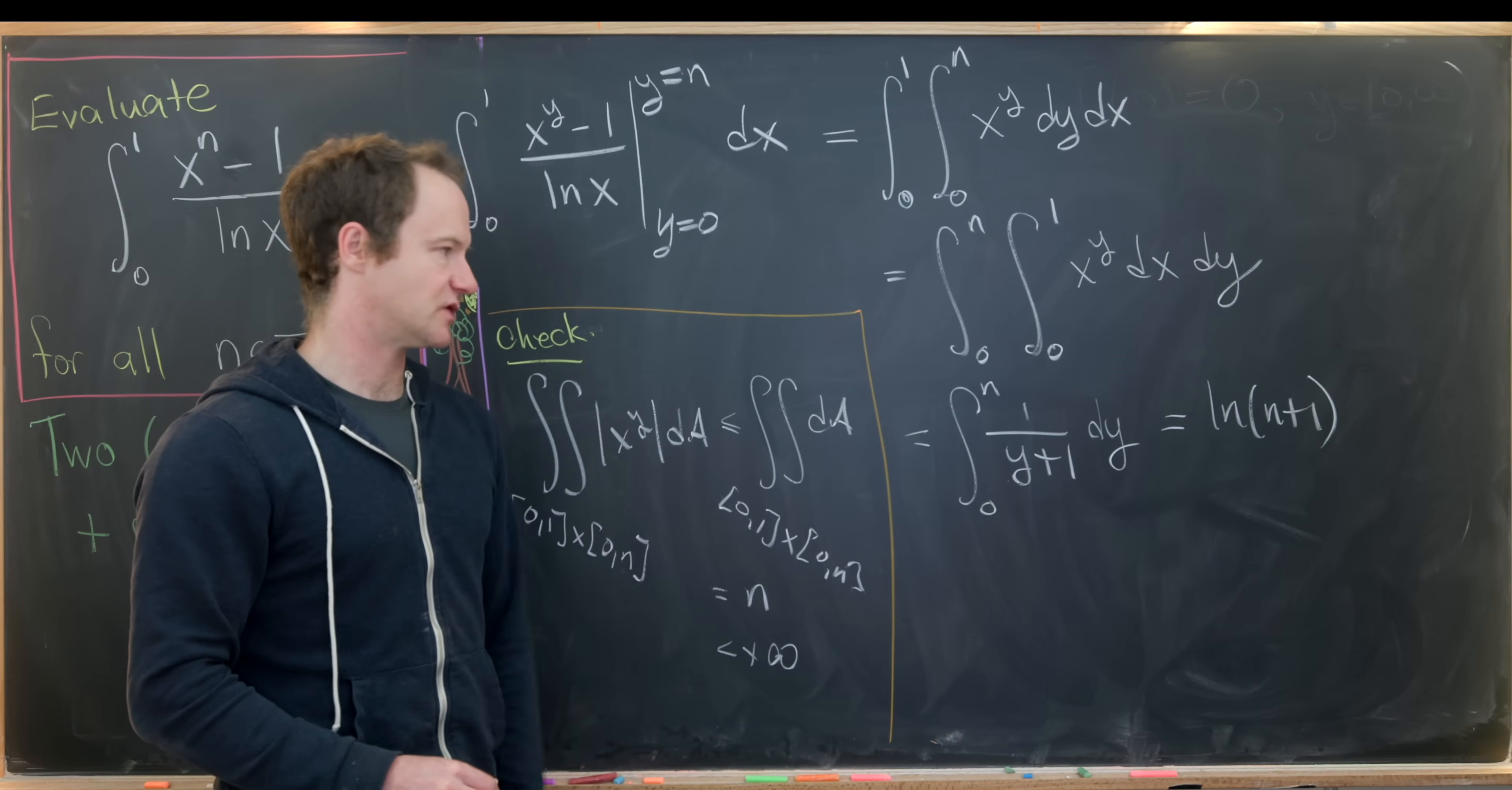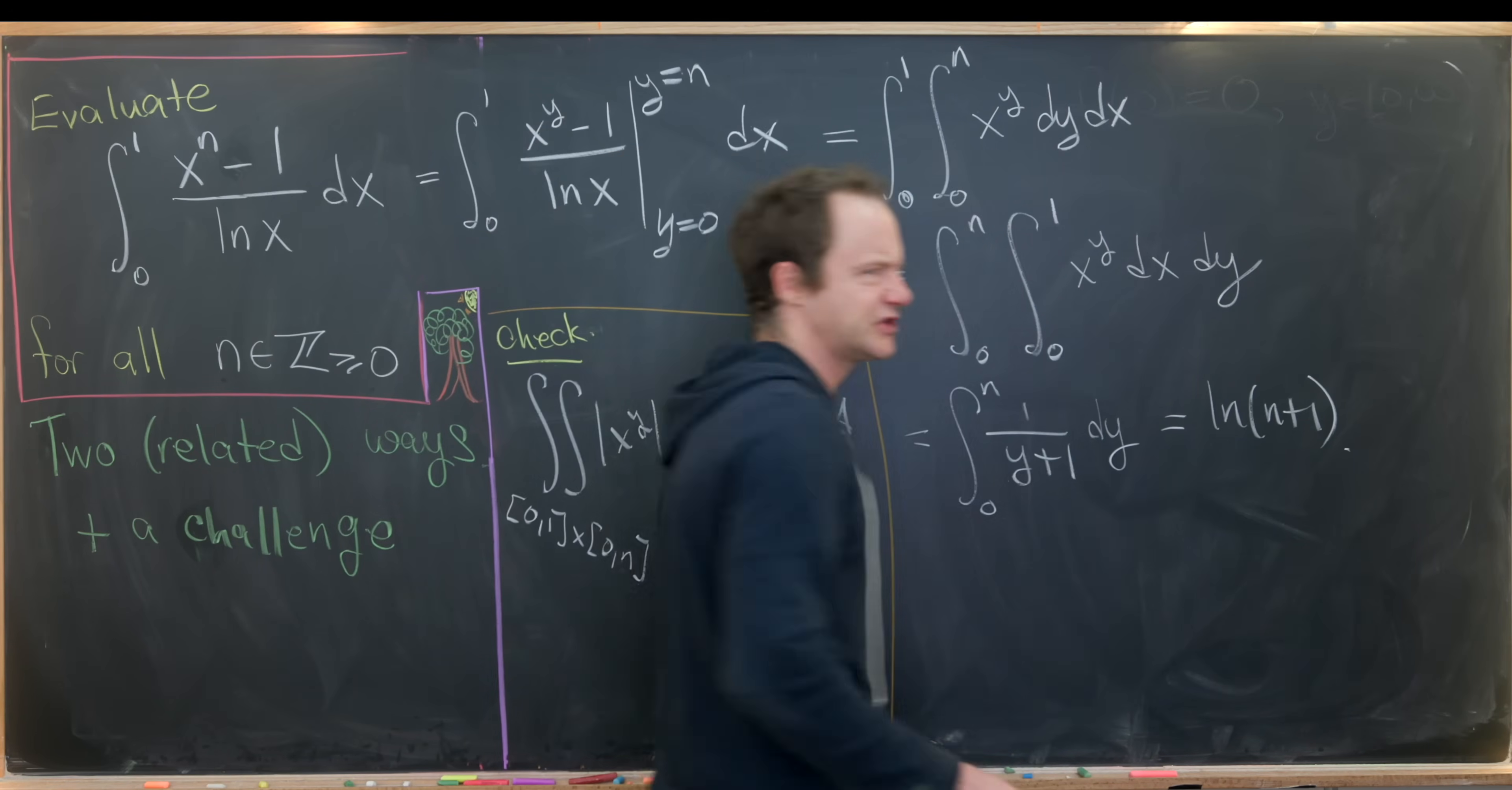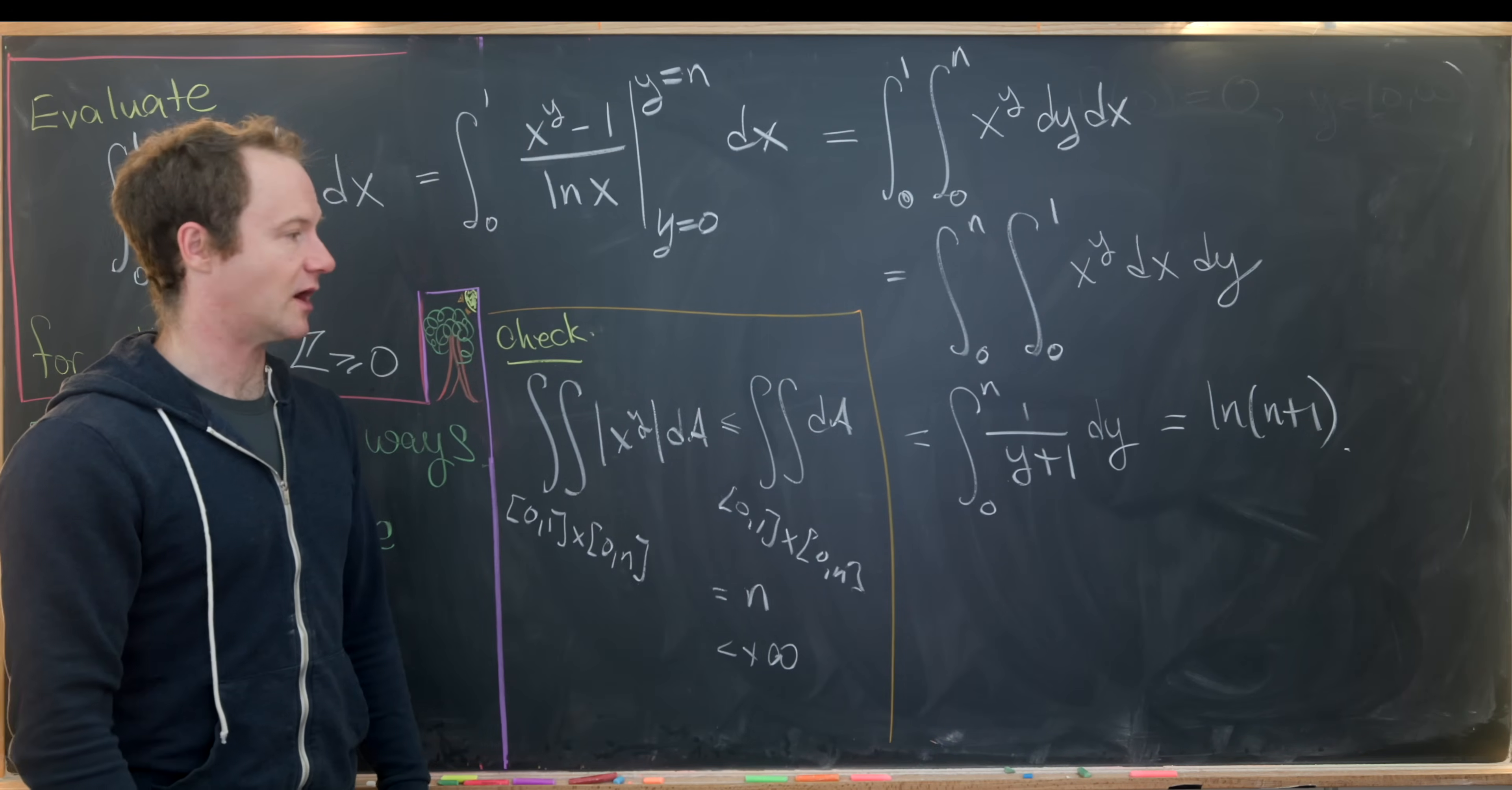Evaluating at the lower bound, we'll get the natural log of 1, which is 0. So we end up with the same solution, which we should, because we're doing the same problem.